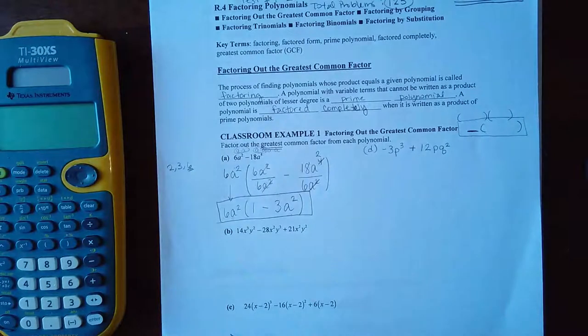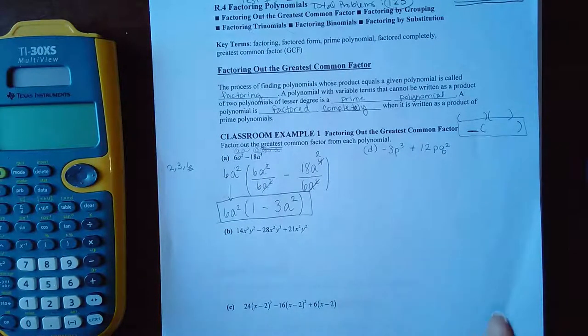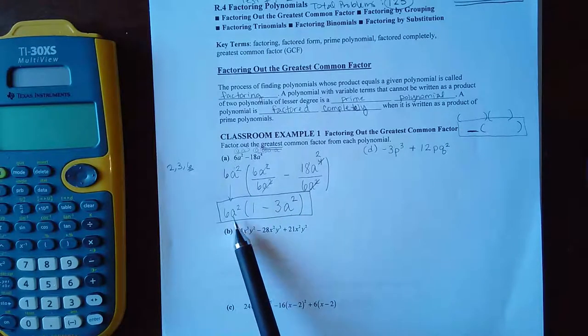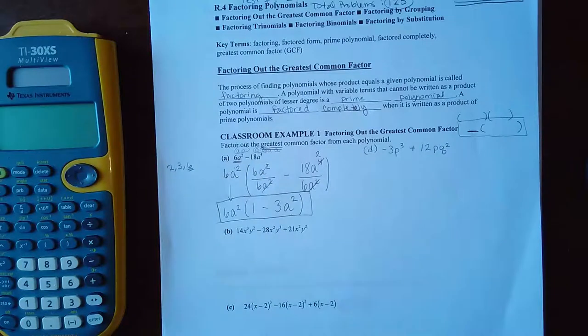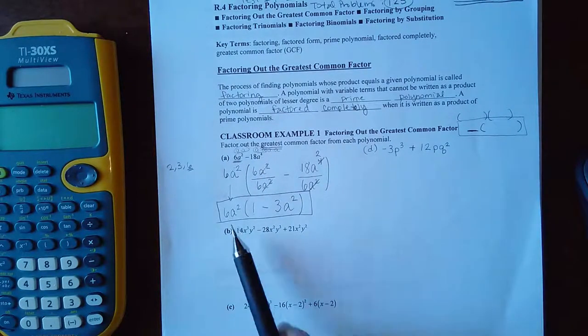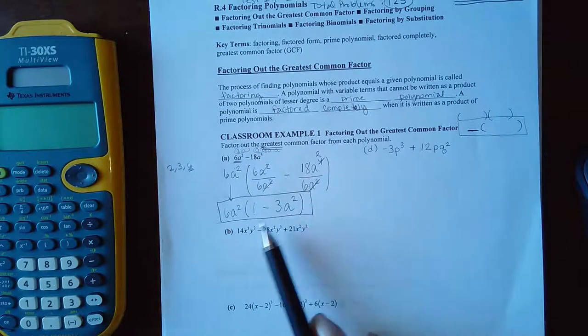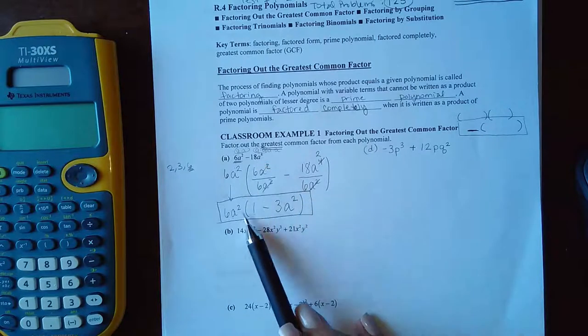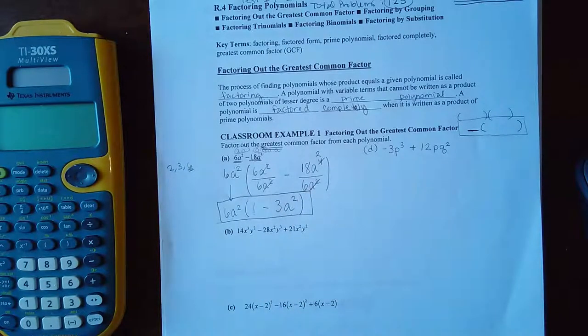So that's one way you can check your answers when you're factoring. Once you have it factored, multiply the factors and see if you get what you were given originally. So here, if I were to do 6A² times one, that would result in 6A². If I were to do 6A² times negative 3A² would be a negative 18. And A² times A² is A to the fourth. So it does check out there.